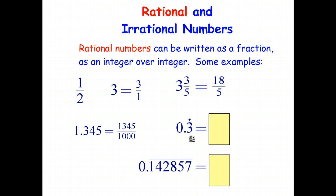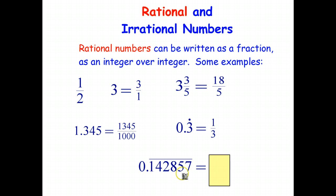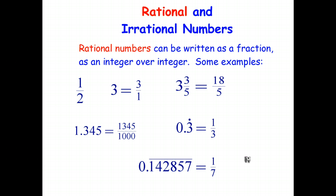Repeating decimals such as 0.333 recurring can be written as one-third, so that's a rational number. And even more complicated repeating decimals such as 0.142857142857 repeating can be written as one-seventh. So all of those are examples of rational numbers.